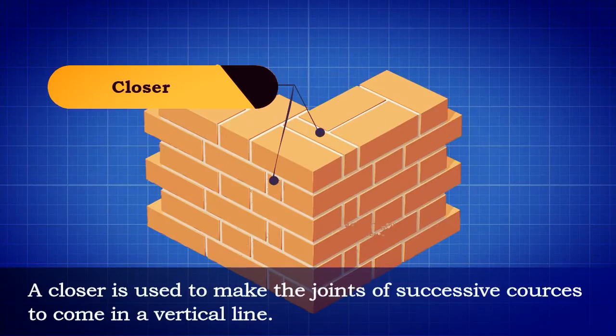A closer is used to make the joints of successive courses to come in a vertical line.